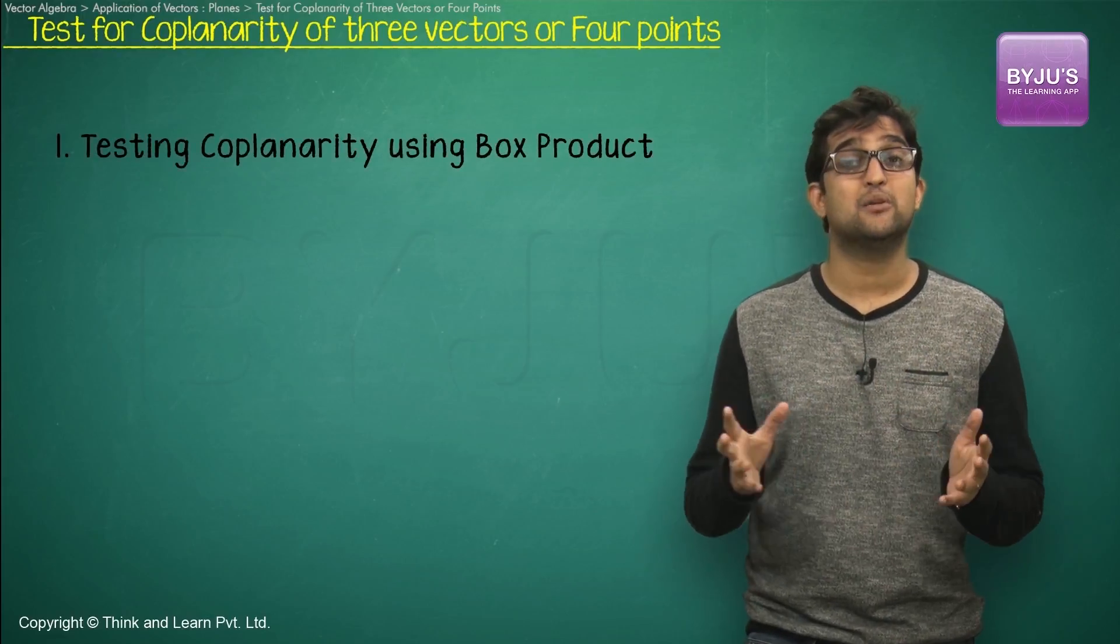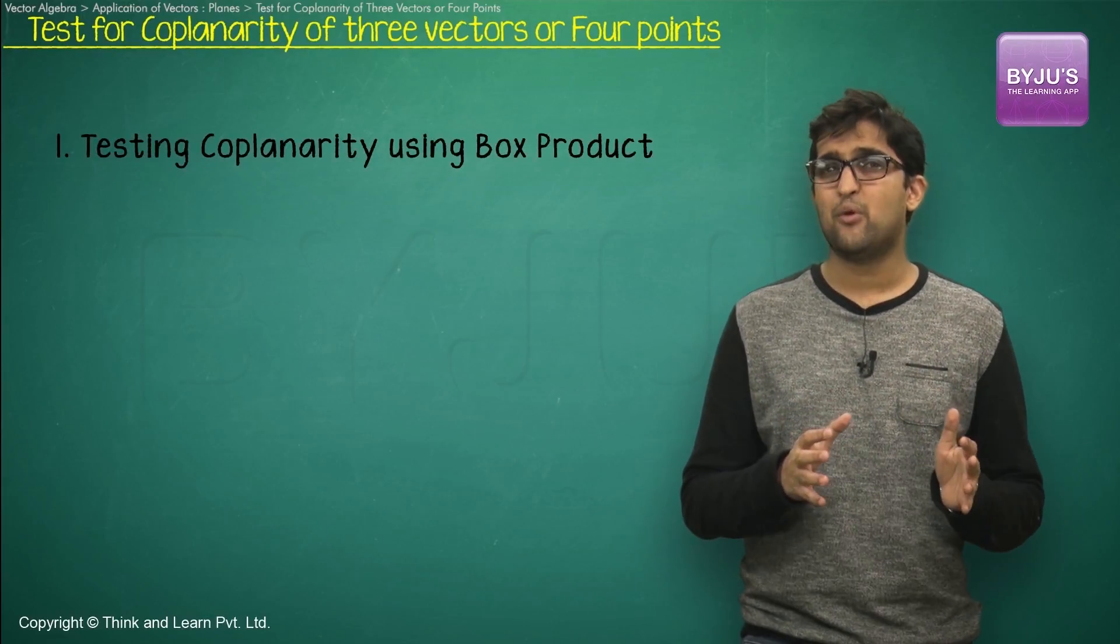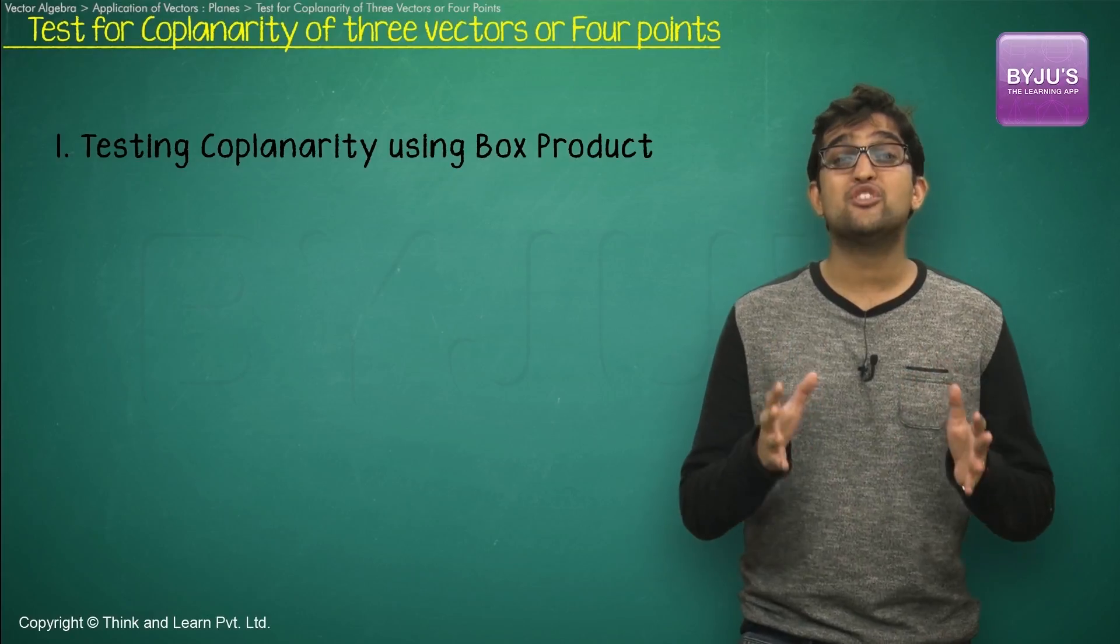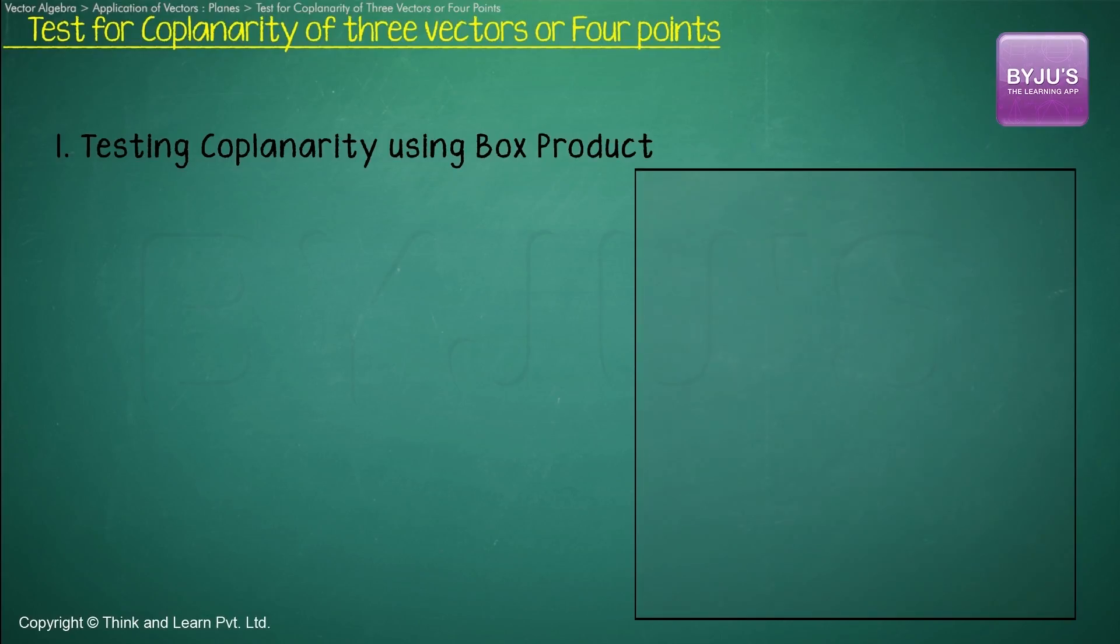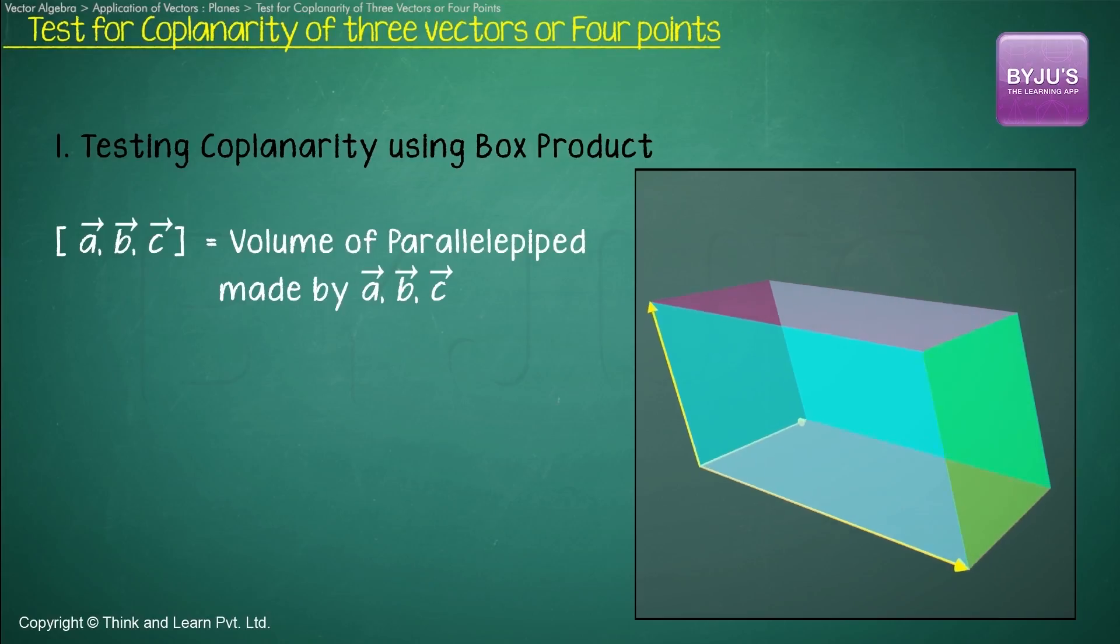So method number one, that's using the box product. We learned in the properties of box product that a box product represents the volume of a parallelepiped formed by three vectors.